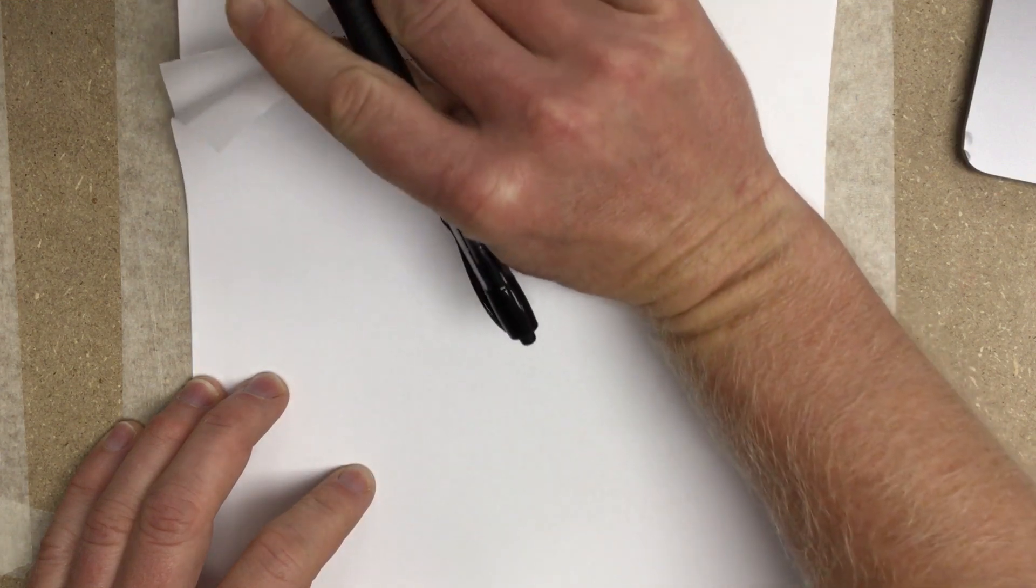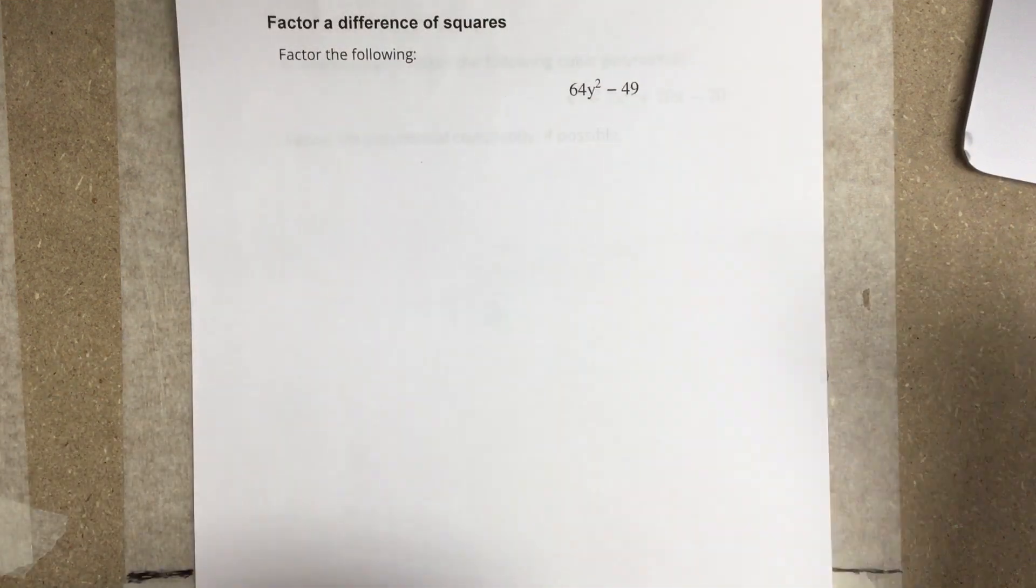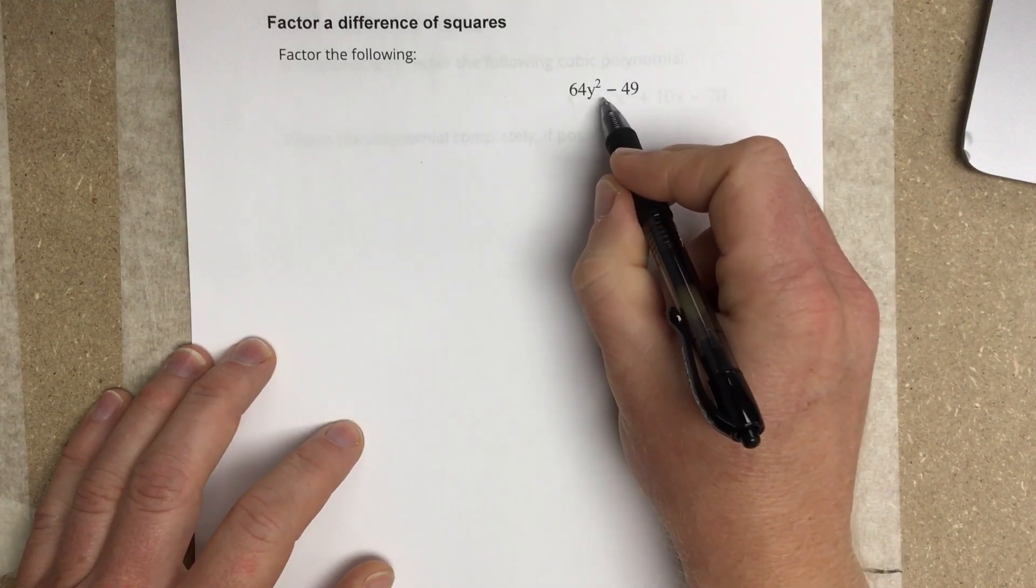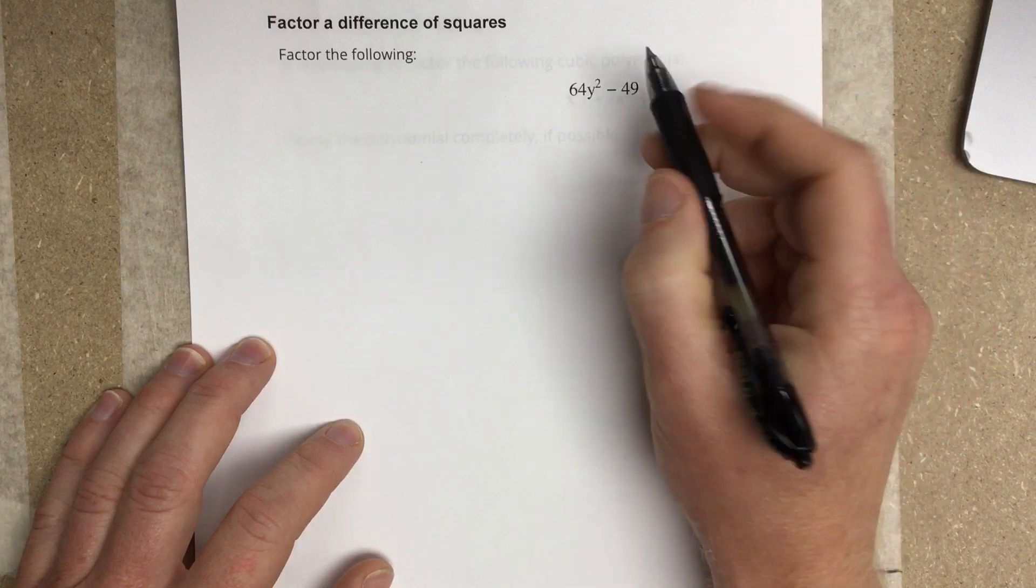Let's try another one. Again, I have no middle term. So the middle term has been canceled, which means I have two binomials that are conjugates of each other.